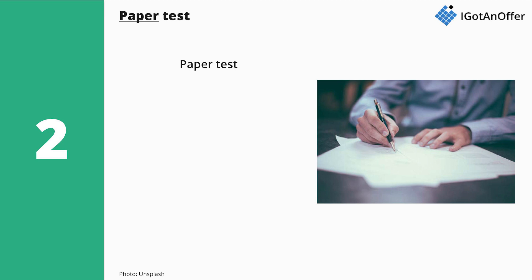Let's now turn our attention to the second format of the BCG Potential Test. So far, we only have candidates from Russia and the Czech Republic saying that they had to go through this second type of test. The paper test contains 53 questions to be answered in 50 minutes. The level of difficulty is similar to the online test, but according to BCG, many people who take the paper test don't manage to answer all questions. In our experience, 53 questions is extremely challenging in just 50 minutes. We think BCG has added more questions than is manageable in order to create more variation in candidates' results — exceptional candidates might manage to answer 45 questions, while average ones will answer only 20.